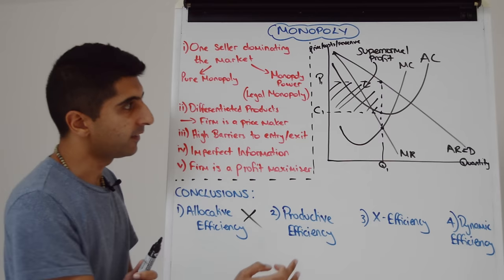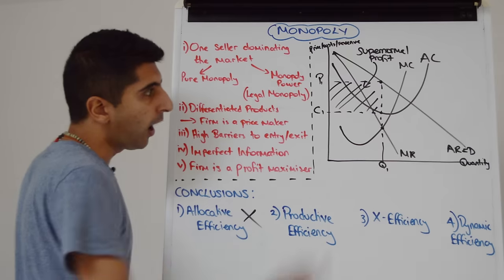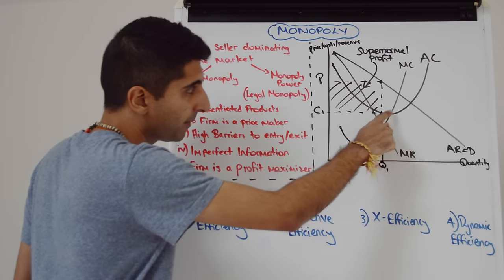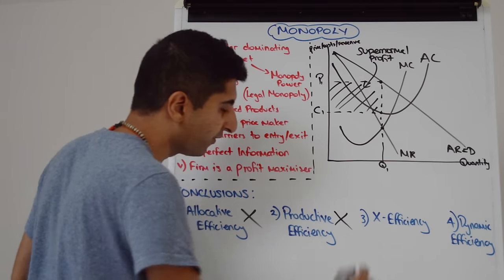So allocative inefficiency is very much bad news for the consumer in a monopoly market. What about productive efficiency? Well, it's clear to see from this diagram as well that even if this monopoly was operating on their average cost curve, that's not going to be at the minimum point. It's going to be somewhere to the left of the minimum point, which means that this monopoly is not productively efficient.